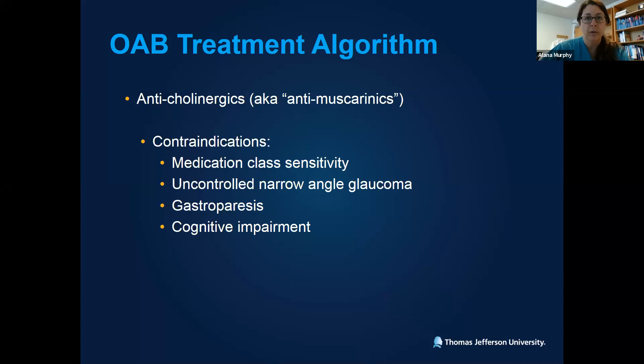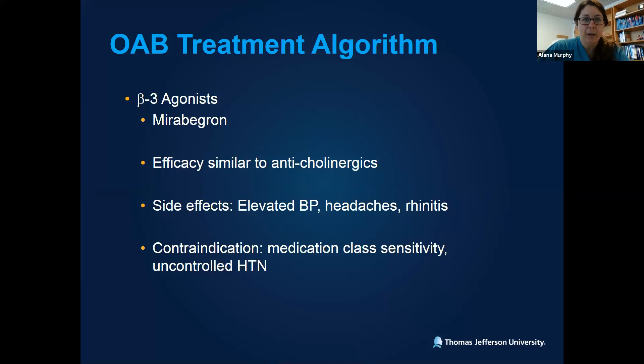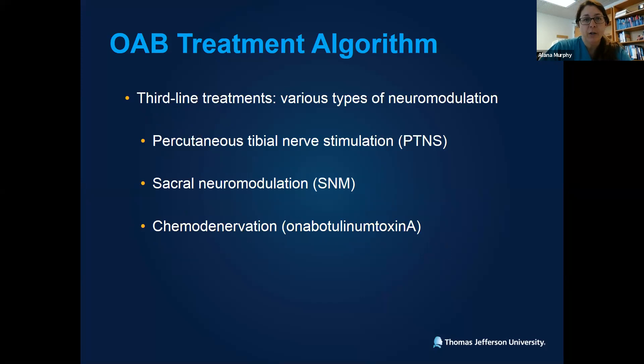Mirabegron is a beta-3 agonist and sits in a class by itself in the US. Efficacy is similar to anticholinergics — there's no data that says one medication is better than another in terms of where to start. Side effects include elevation in blood pressure, headaches, and rhinitis. Contraindications include medication class sensitivity and uncontrolled hypertension. So if a patient comes in with a systolic of 180 already on two antihypertensives, that's not a great candidate for mirabegron. If patients fail behavioral modifications and medication trials, they cross over into refractory overactive bladder and we move into third-line treatments, which include some form of neuromodulation therapy.